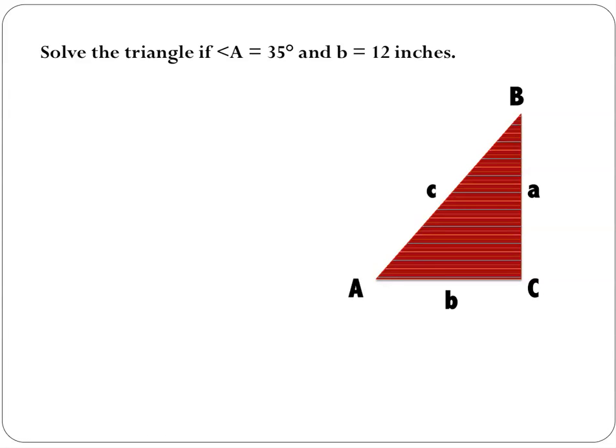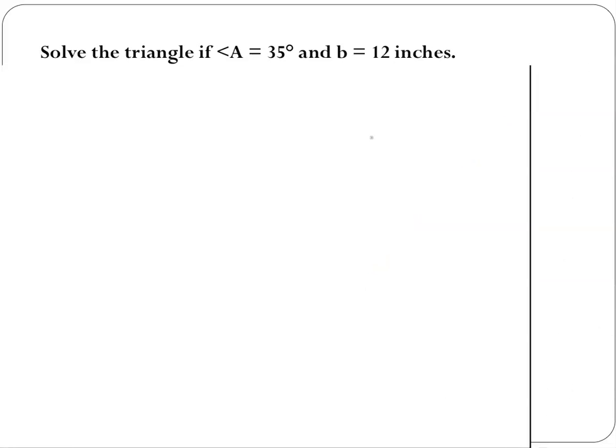If I look at this triangle and I'm told that angle A is equal to 35 degrees and b equals 12 inches, I can solve for every other part of the triangle. We're going to start by drawing out our triangle, just how it was on the PowerPoint, except the variables that we were given, we're going to label. So we know that this bottom length is 12, and that the angle is 35.